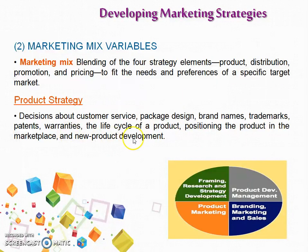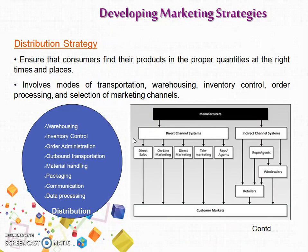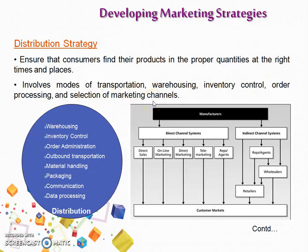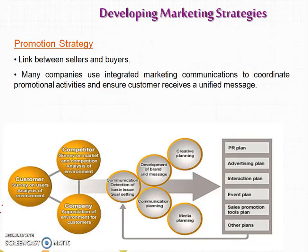After the product strategy, we come to the distribution strategy — the place decision — how the products would be placed into the market or how the customer will reach the product. It should ensure that the consumer finds their product in the proper quantity, at the right time and right places. It involves decisions regarding transportation, warehousing, inventory control, order processing, and selection of marketing channels.